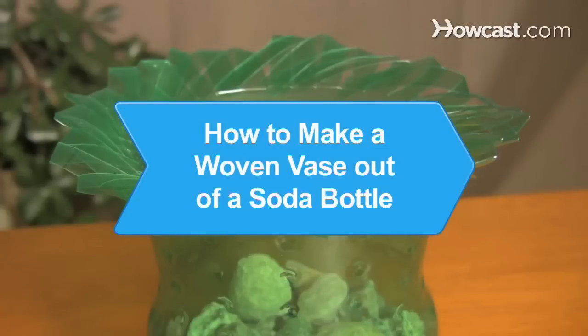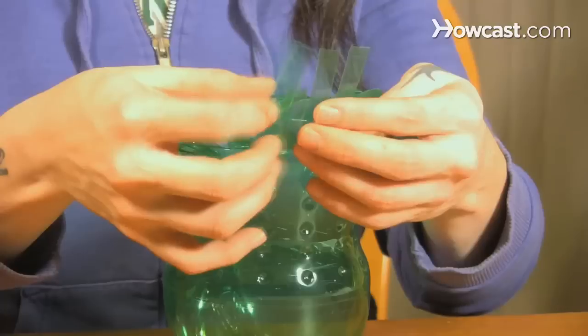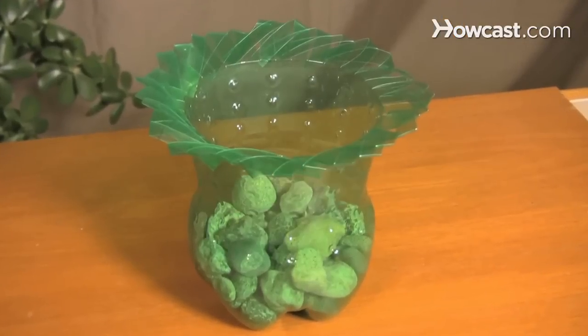How to Make a Woven Vase Out of a Soda Bottle. Use a plastic soda bottle to make a vase that, if you didn't know better, you'd swear it was made out of crystal.